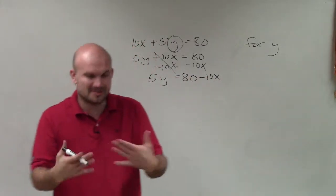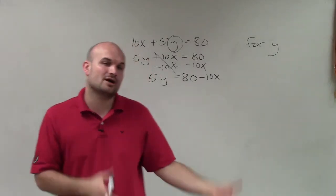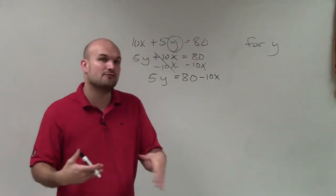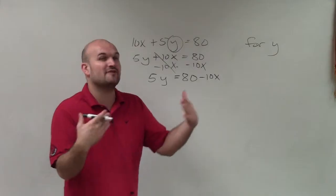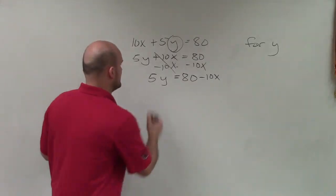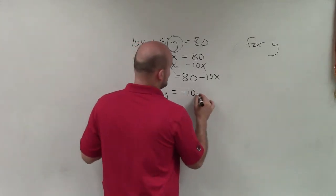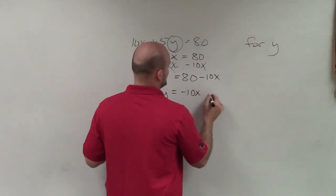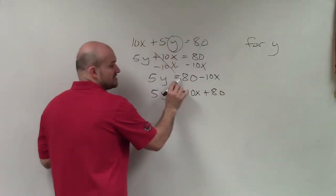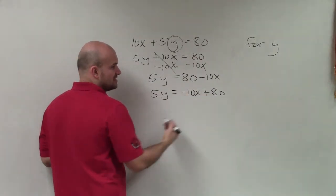However, in this course and in future courses, when we're writing our linear equations or quadratic, we always write them in standard form. We like to have the variable first and always our constant at the end. So I'm going to rewrite this as 5y equals negative 10x plus 80. Since that 80 is positive, there are no negatives on the front, so it's going to be plus 80.